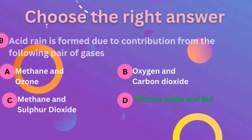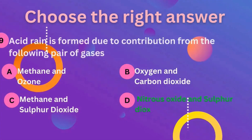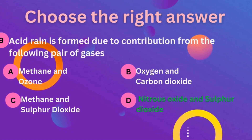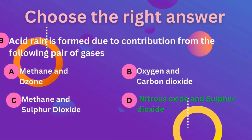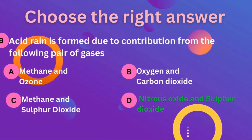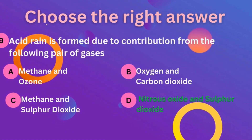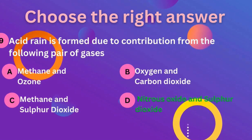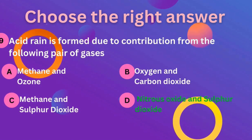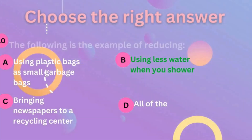Question 9: acid rain is formed due to contributions from which pair of gases? The correct answer is D — nitrous oxide and sulfur dioxide.